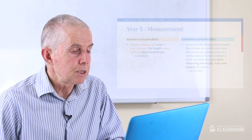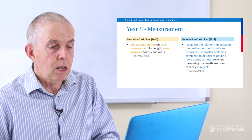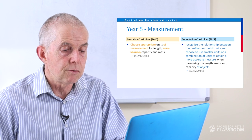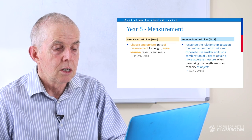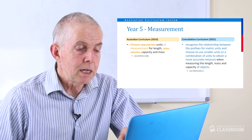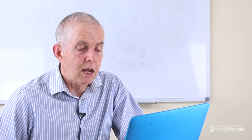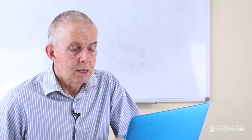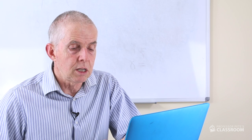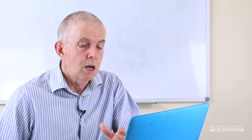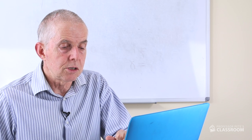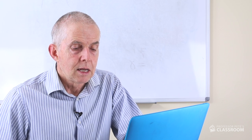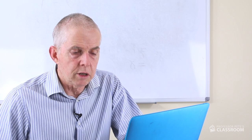Let's move straight on to measurement — Year 5 measurement, number one. Recognise the relationship between the prefixes for metric units and choose to use smaller units or a combination of units to obtain a more accurate measure when measuring the length, mass and capacity of objects. In the old one it included measurement of area and volume, and that's been removed. Volume's gone completely until at least Year 7, and area was in Year 4. I'm not overly concerned because there's a lot to like in this new curriculum. Prefixes for metric units were left out of the previous curriculum and they should have been there. Using combinations of units and smaller units is very, very useful — well done.